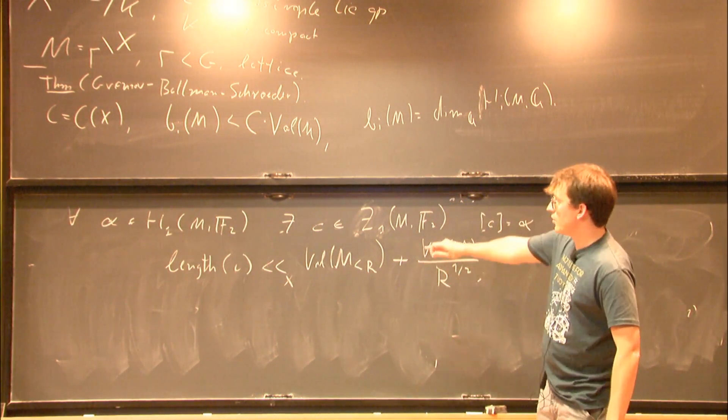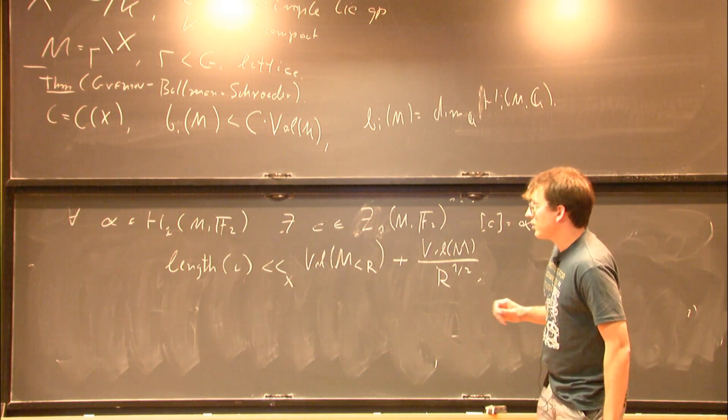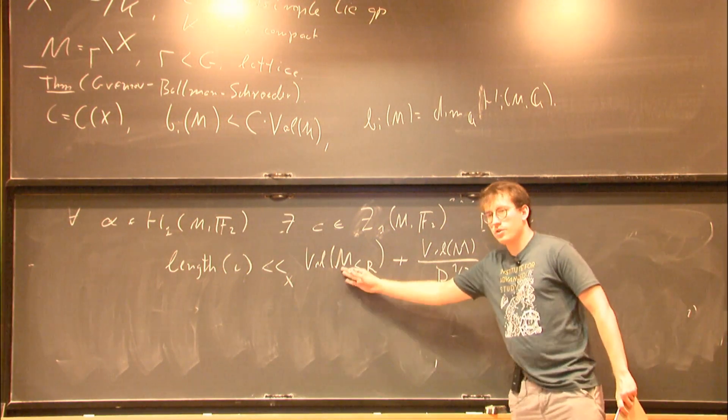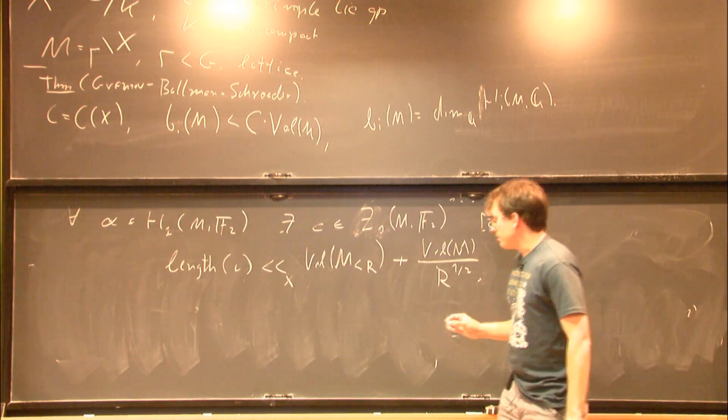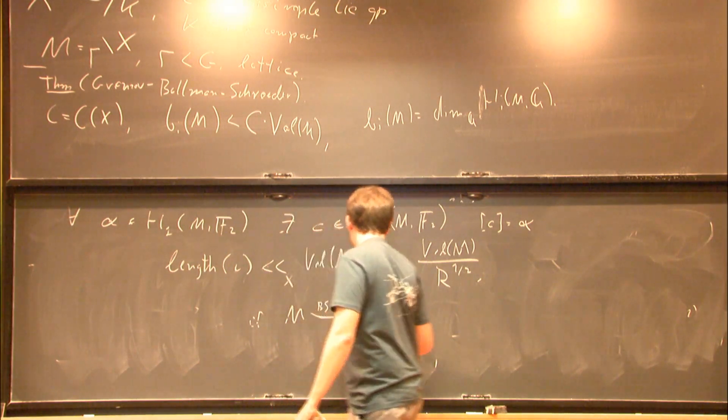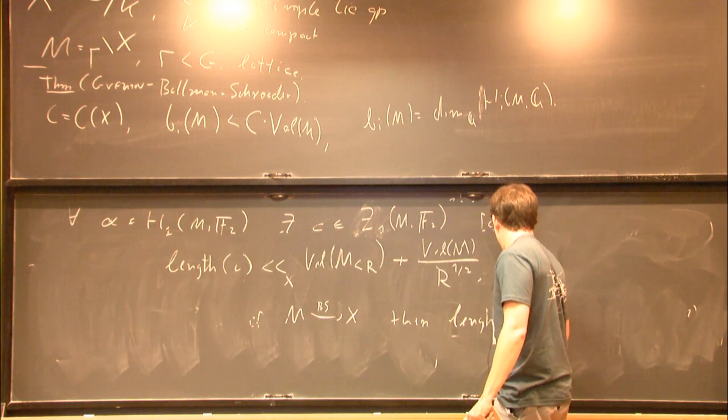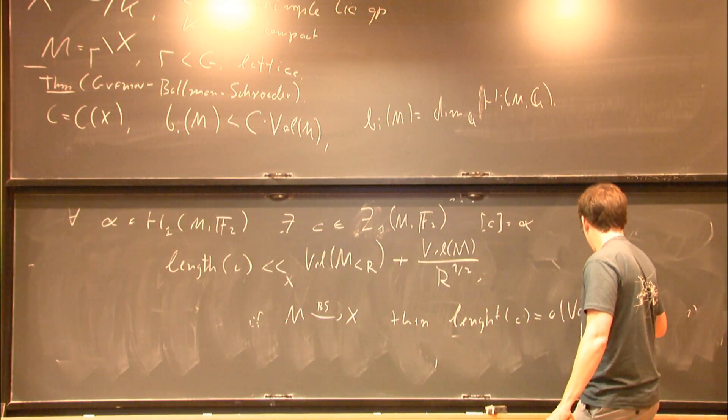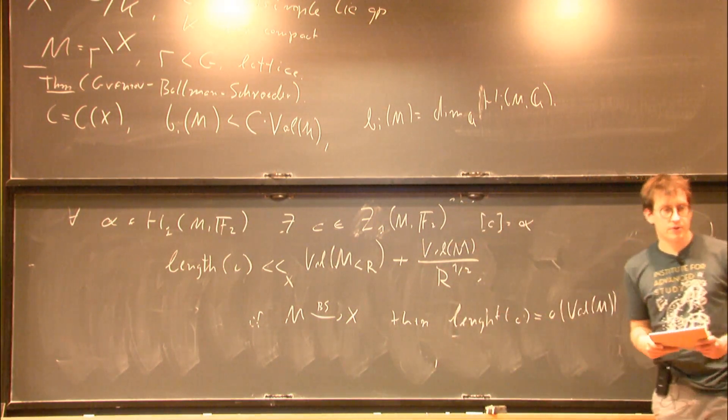This holds for every higher rank symmetric space M, modeled after X. Now, if we take a Benjamin-Schramm convergent sequence, then this converges to zero, and we can then slowly let R go to infinity, and we deduce that in particular, if M converges Benjamin-Schramm to X, then this length of C is small o of volume. And this is the key to this estimate on the dimension of first mod 2 homology.